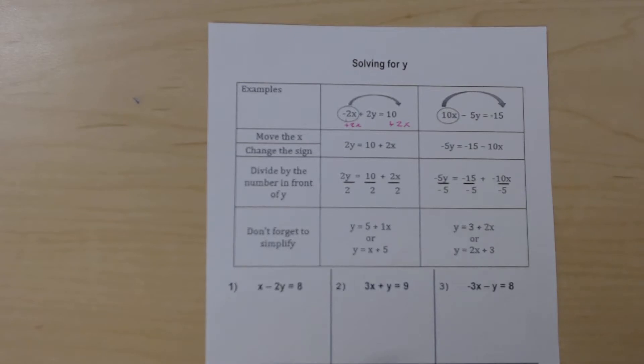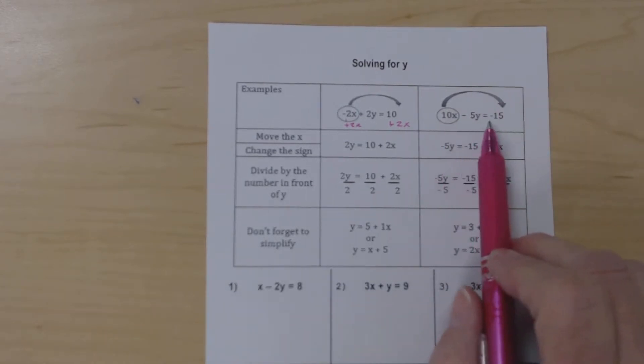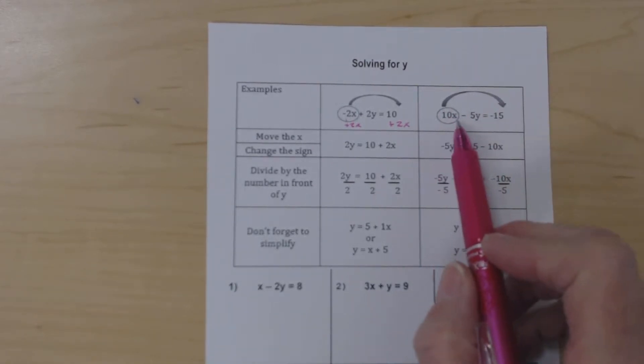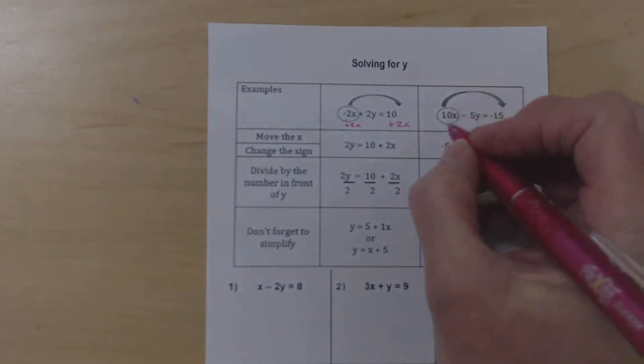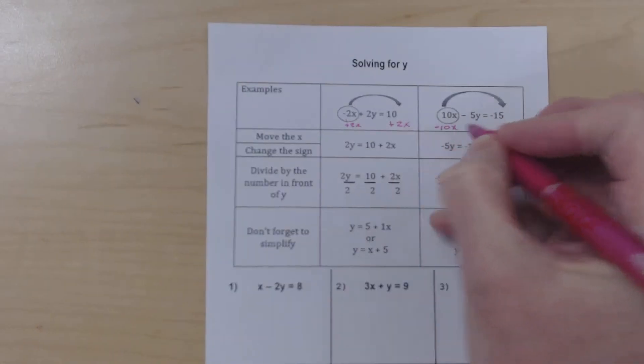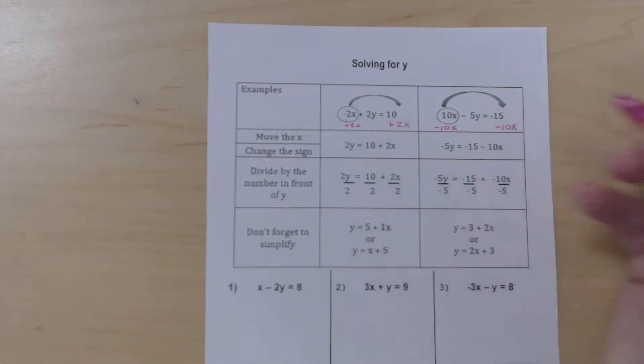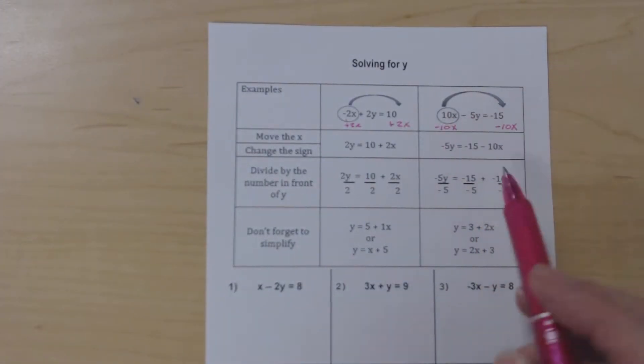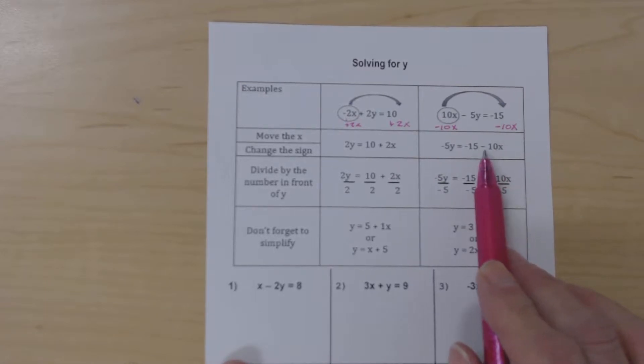So here's another example. We have 10x minus 5y equals negative 15. We're going to take this positive 10x, move it to the other side by effectively subtracting 10x from both sides. These are going to zero out, so it really just looks like I moved that 10x over to the other side and changed its sign.